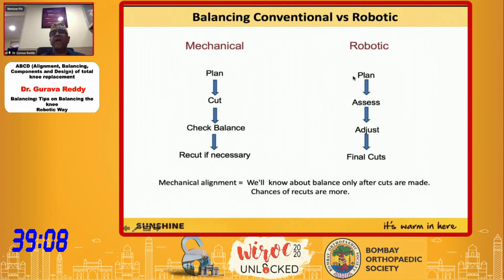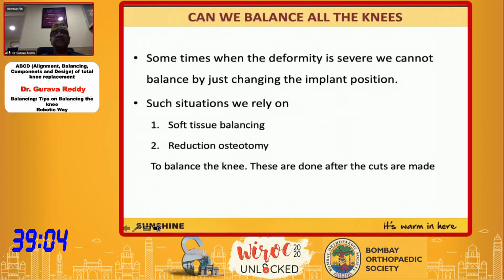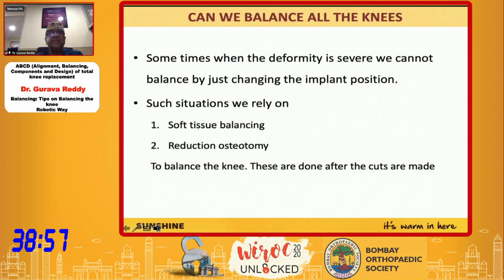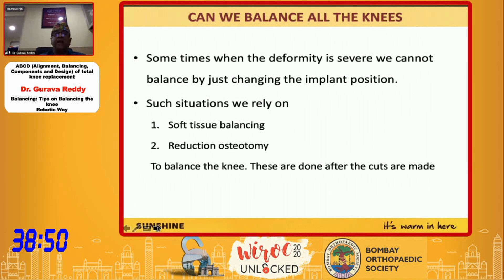The robotic workflow is: plan, assess, adjust, and final cut. Before cutting, we are already planning — that is the single most important advantage. However, when the deformity is severe, we cannot balance by just changing the implant position. In such situations, we rely on soft tissue balancing and reduction of osteophytes to balance the knee, and these are done after the cuts are made.